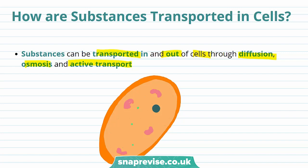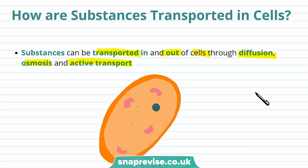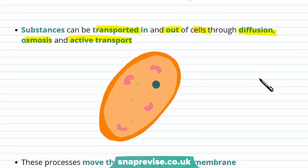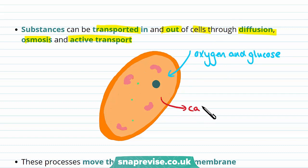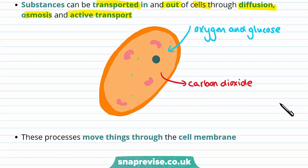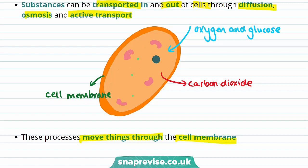So now let's look at some substances that a cell might need to take in. For instance, a cell might need to take in oxygen and glucose, and get rid of a waste product such as carbon dioxide. These processes move things through the cell membrane, which is useful as it holds the cell together and controls what goes into and out of the cell.